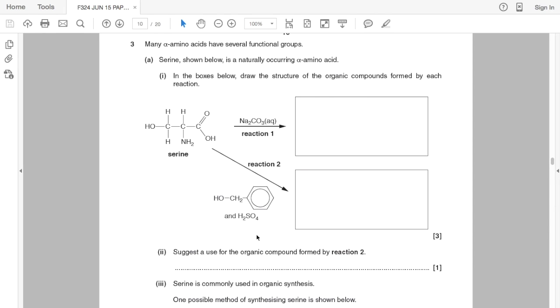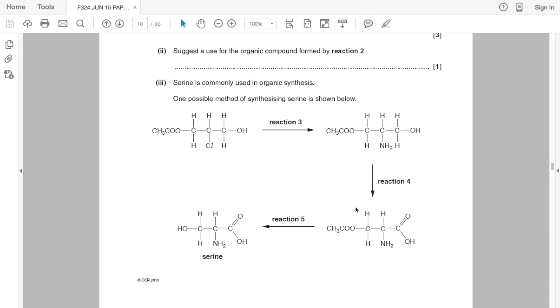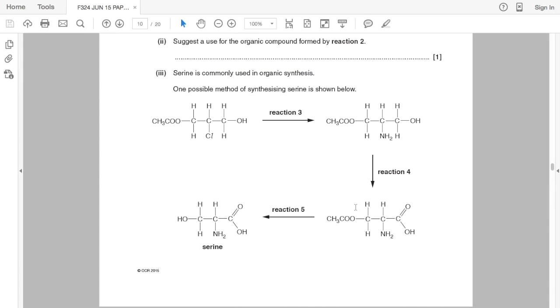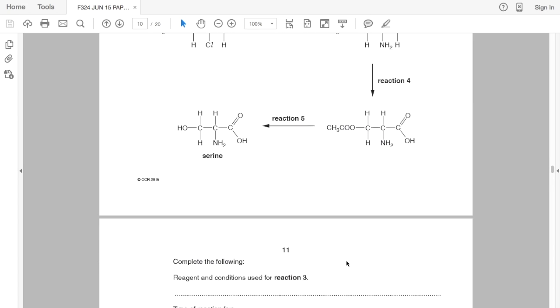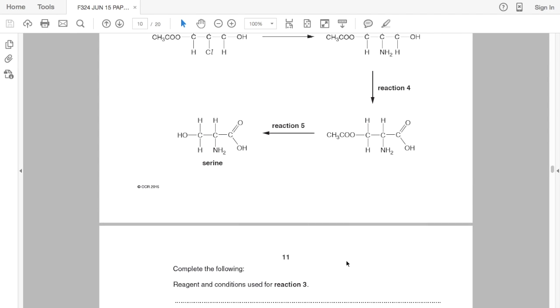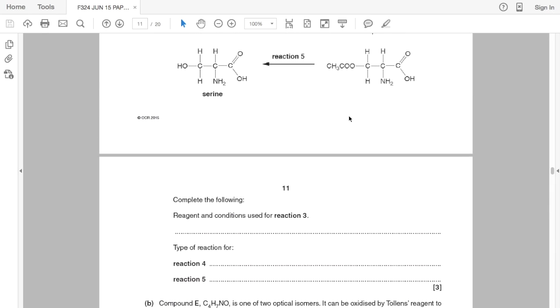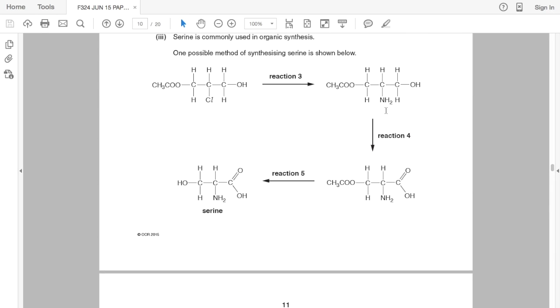We've got to suggest a use for the organic compound formed in this reaction and then we're given some more reactions of serine, told that it's used in organic synthesis. On the next page we've got to start completing some information about these reactions. So reaction 3, what would the reagents and conditions be for this change here? And what types of reactions are reaction 4 and reaction 5?